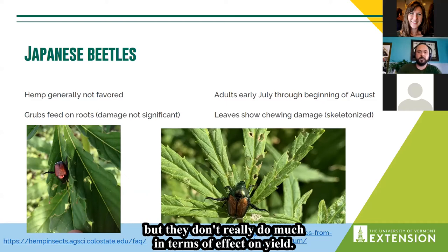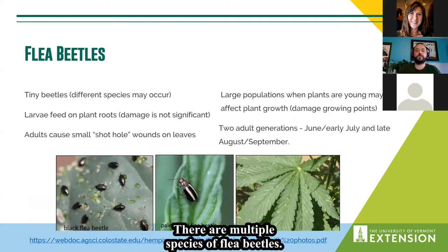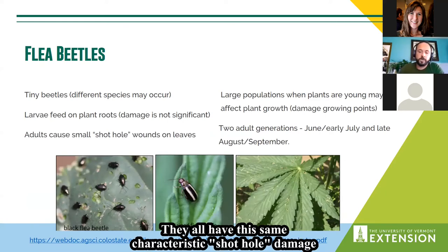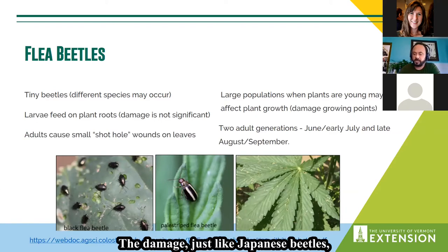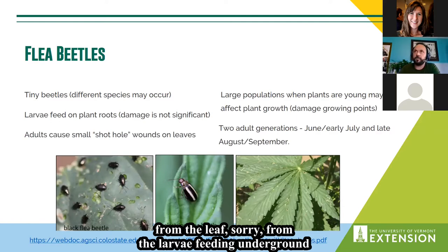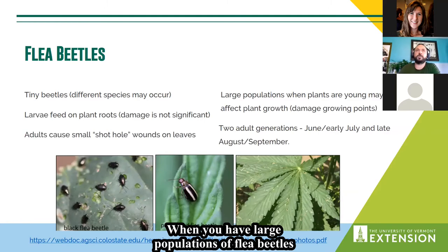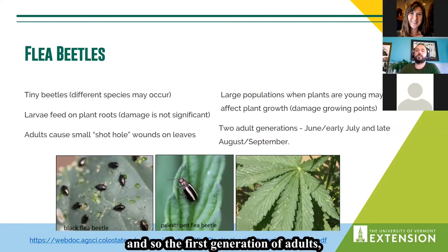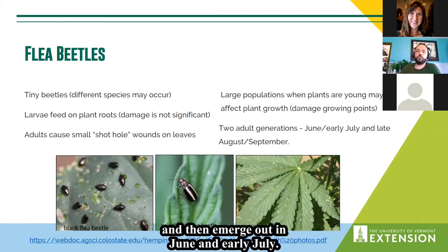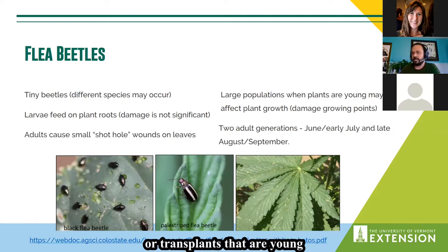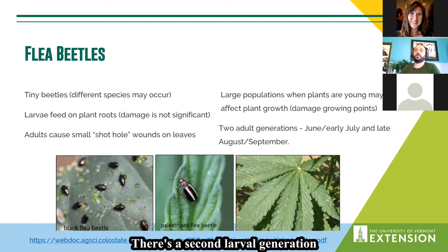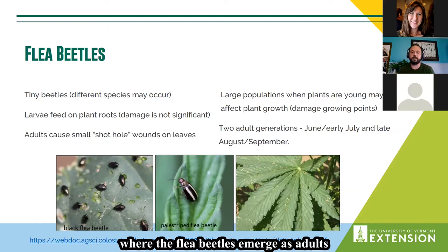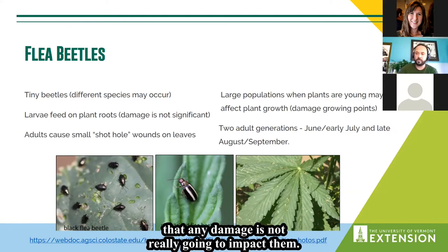Flea beetles — multiple species — all have the same characteristic shot-hole damage on plants. Just like Japanese beetles, the larvae are in the ground feeding on plant roots, and that larval damage underground is not really significant. The issue is when you have large populations on really young plants: the first generation of adults overwinter and emerge in June and early July, so if you've got seedlings or transplants that are young at the same time as flea beetles arrive, that's where you have a problem.